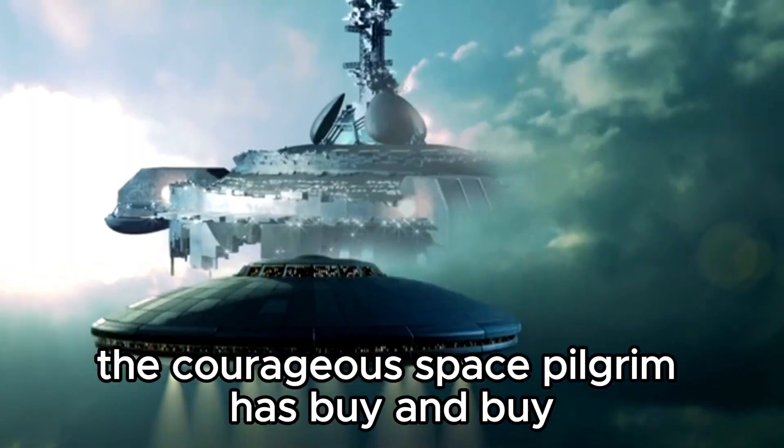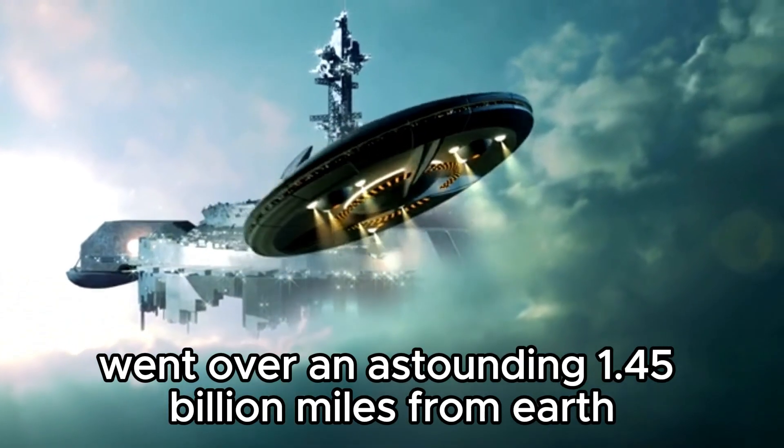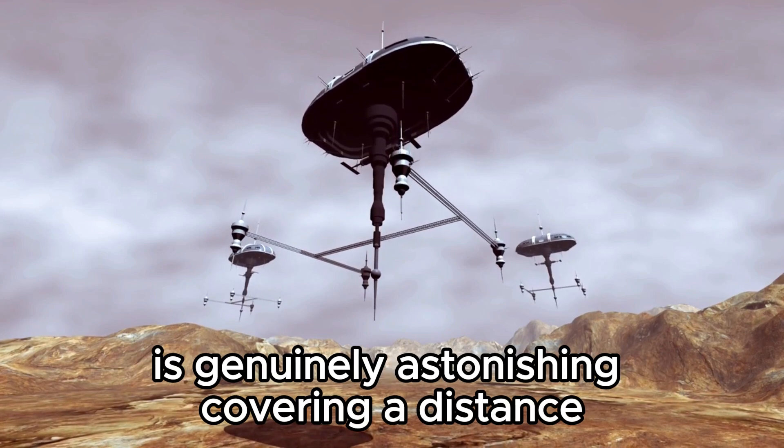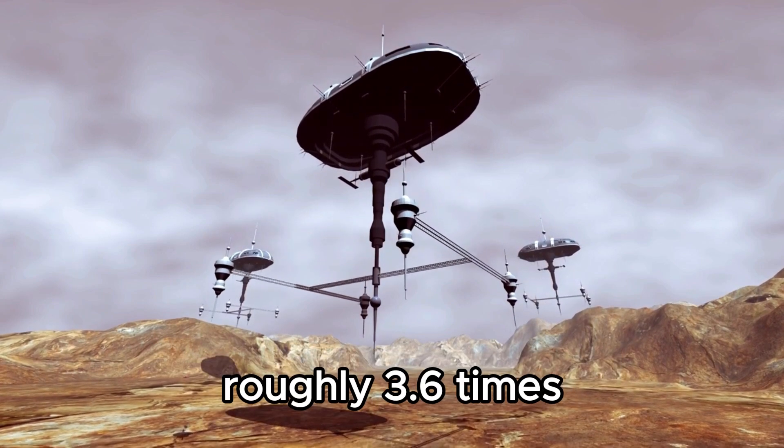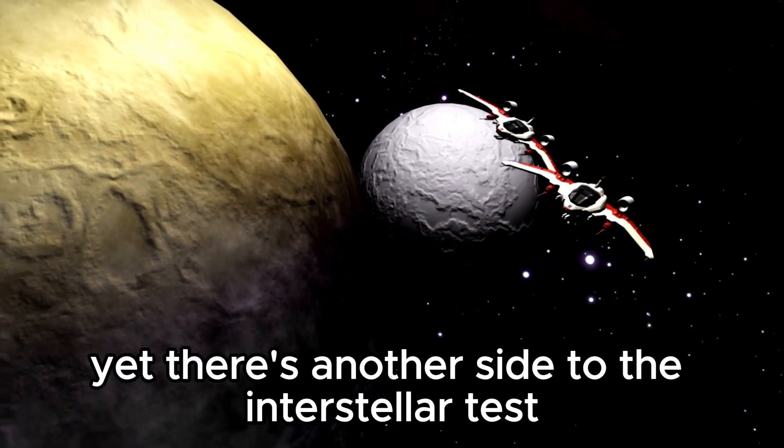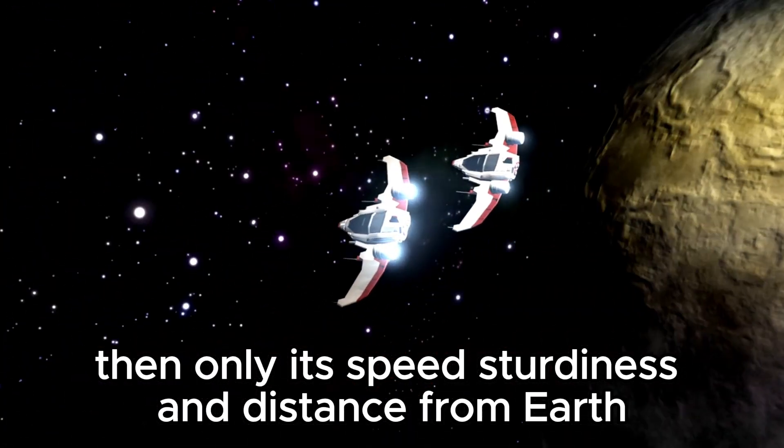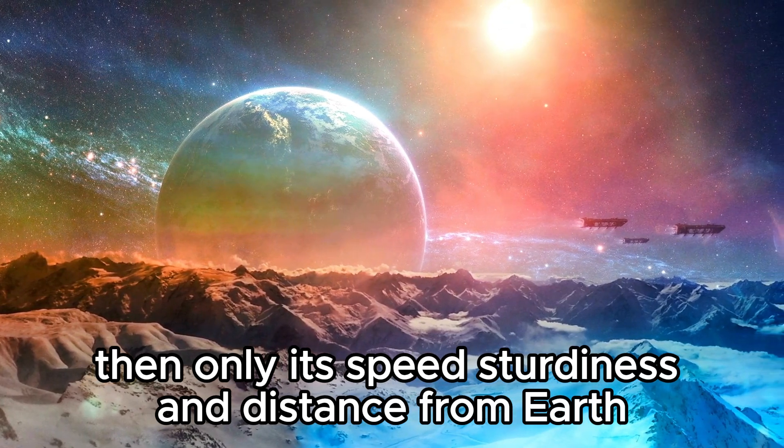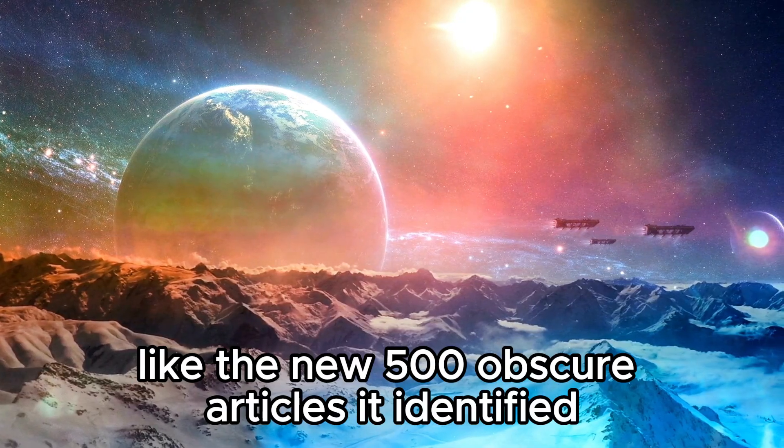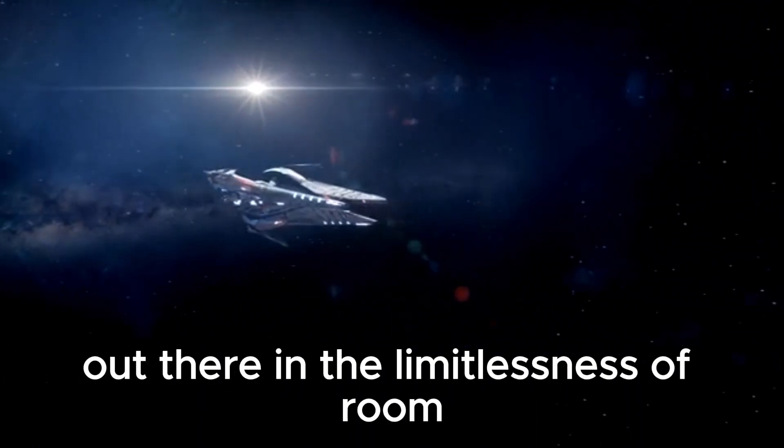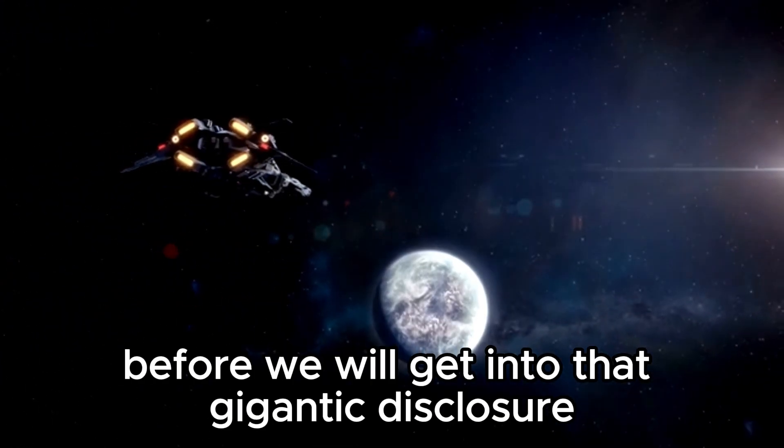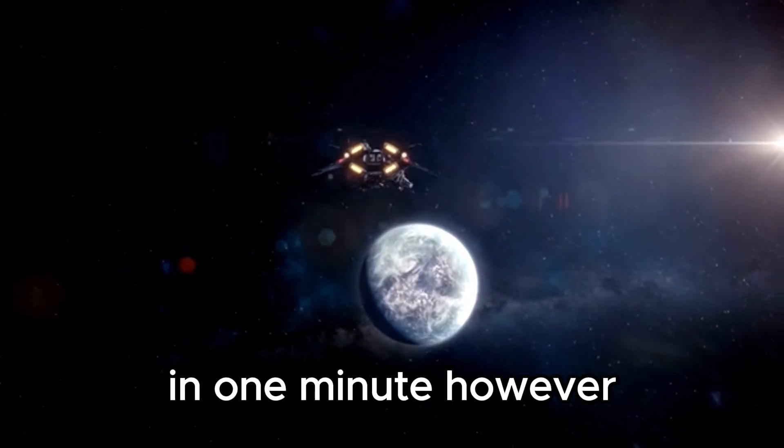Explorer 1, the courageous space pilgrim, has by and by went over an astounding 1.45 billion miles from Earth. The speed at which the shuttle goes through space is genuinely astonishing, covering a distance roughly 3.6 times the space between the Earth and the Sun each year. Yet there's another side to the interstellar test than only its speed, sturdiness, and distance from Earth. Explorer has sent a few weighty disclosures to us, like the new 500 obscure articles it identified out there in the limitlessness of room. These are uncommon heavenly items that we've never seen or analyzed before.